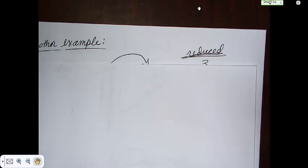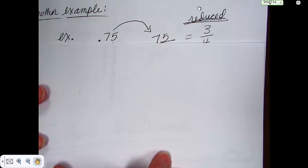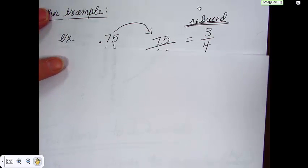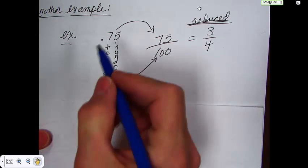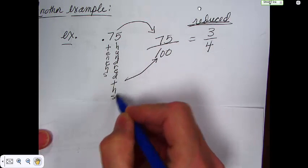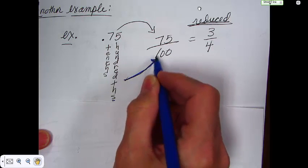Let's say that your next example here is 0.75. If you were to say that, you'd say 75 hundredths. Because this is tenths, this is hundredths. So you take this, which is hundredths, and you write that in the denominator.